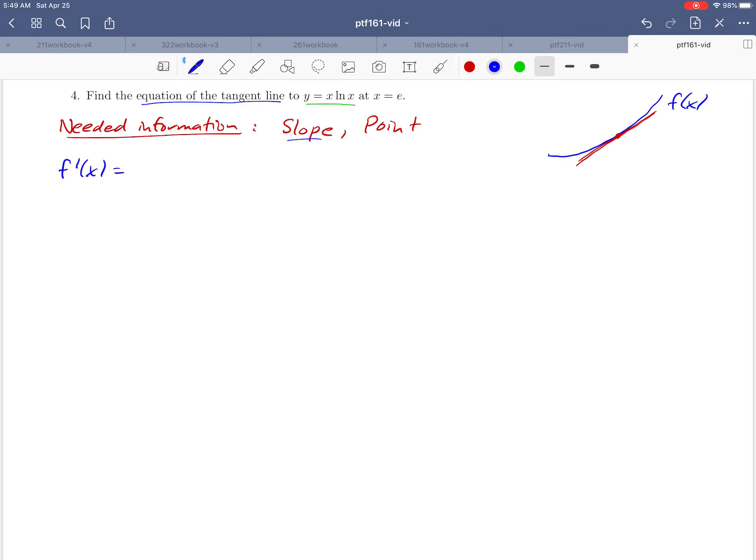You might notice that x ln of x is a product, so we're going to use the product rule to take the derivative. We're going to get x times the derivative of ln of x, which is one over x, plus ln of x, and the derivative of x is just one. And notice that here you can cancel the x's, make this a little simpler. We get a derivative that just looks like one plus ln of x.